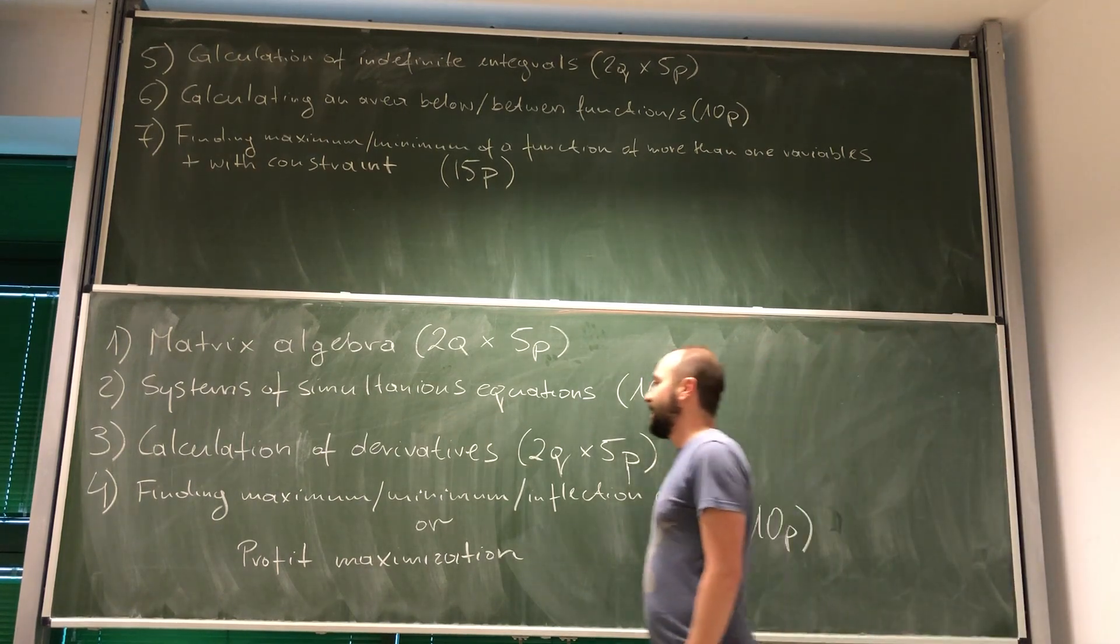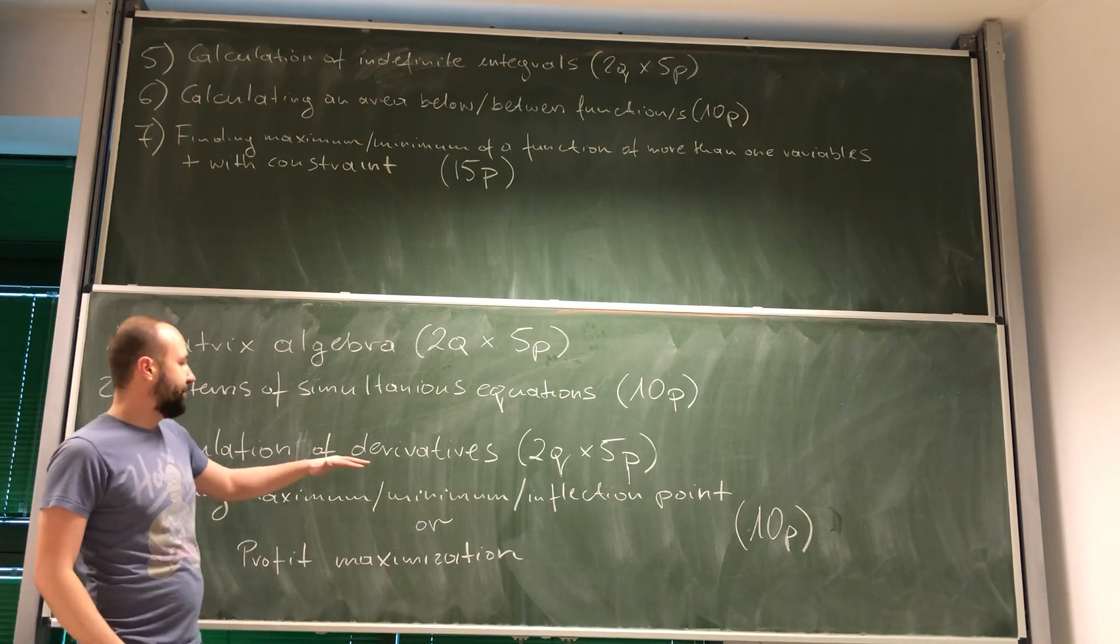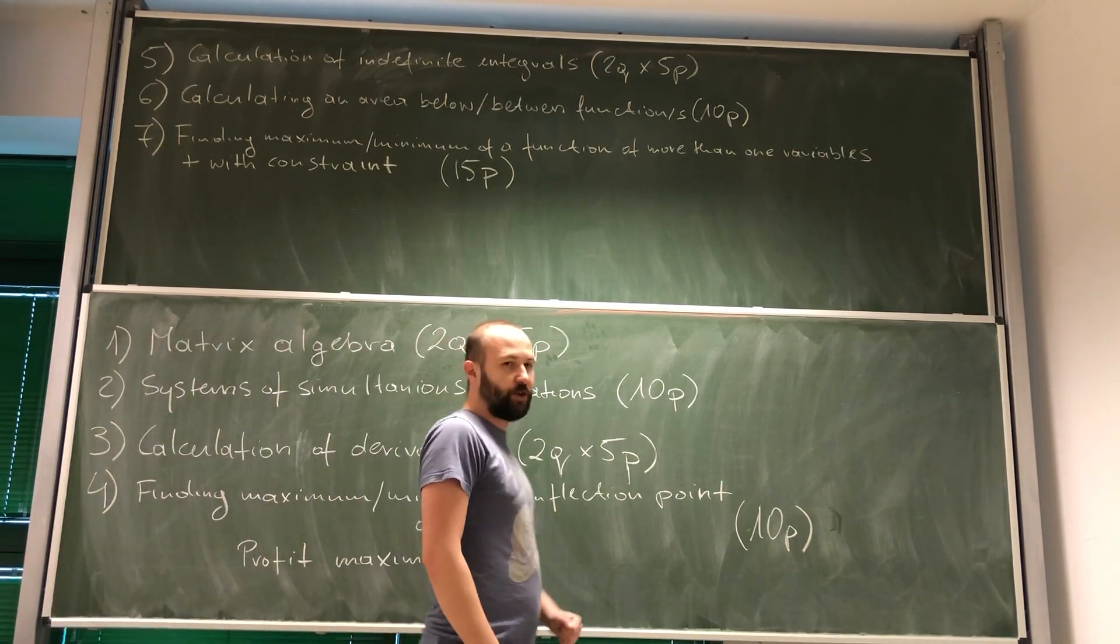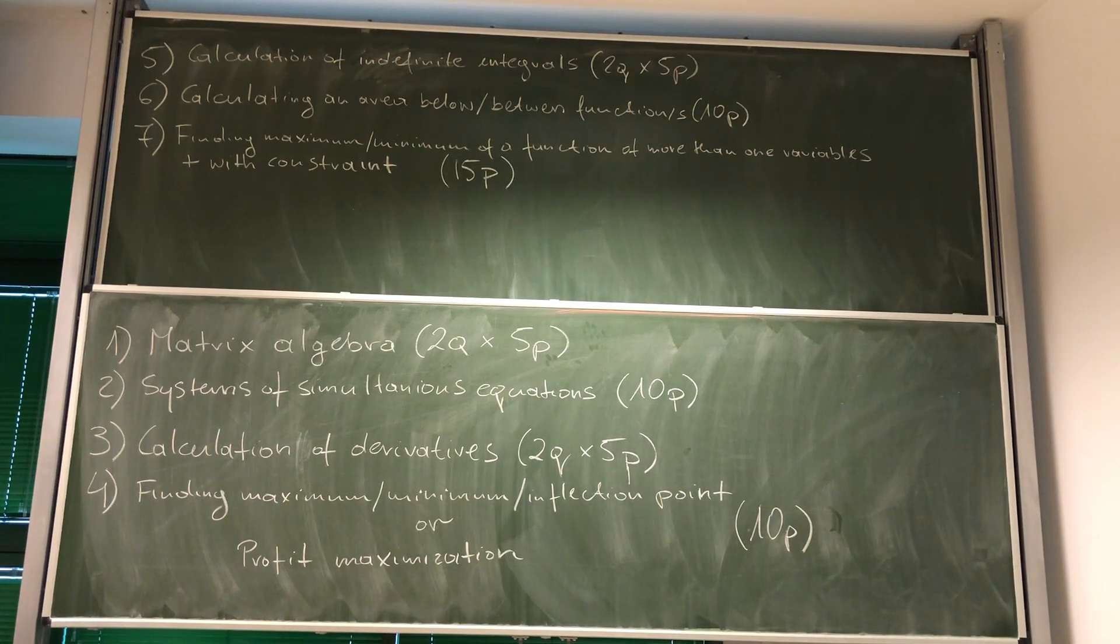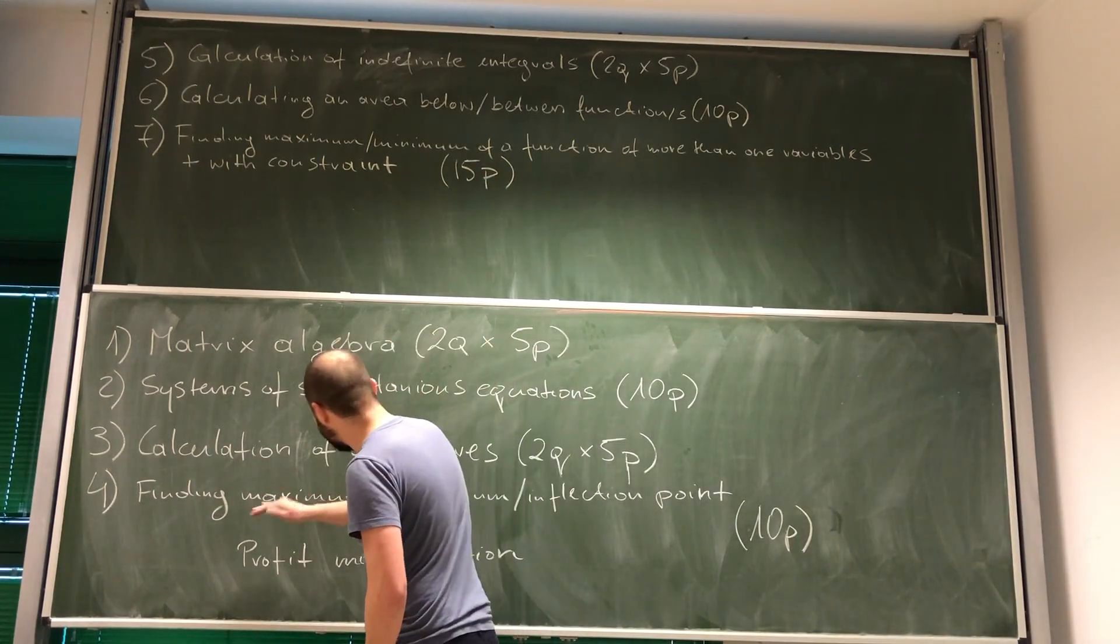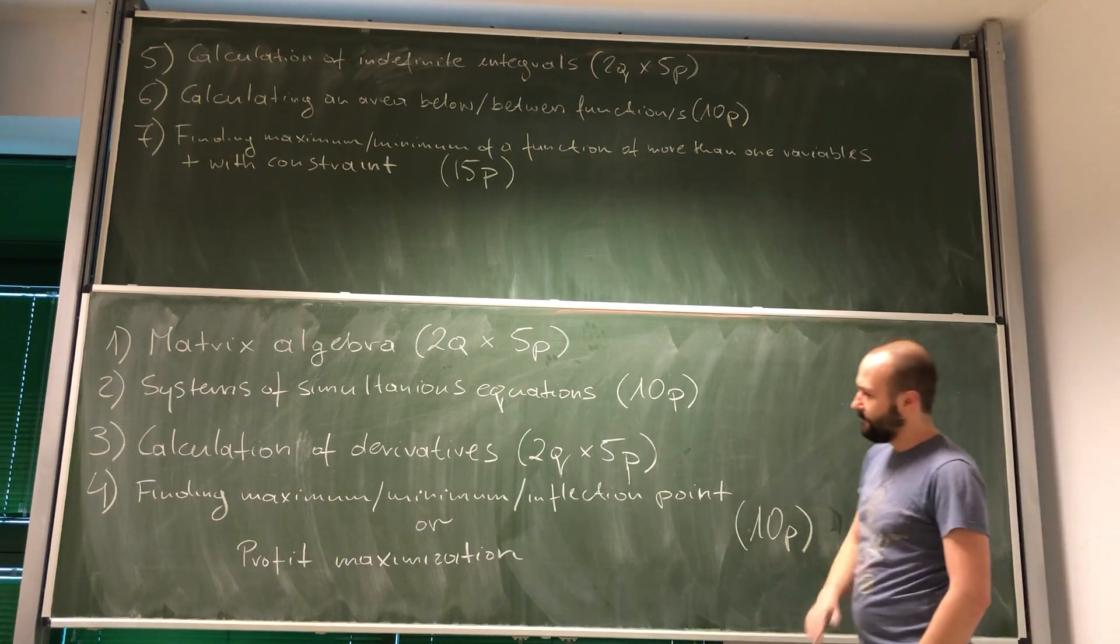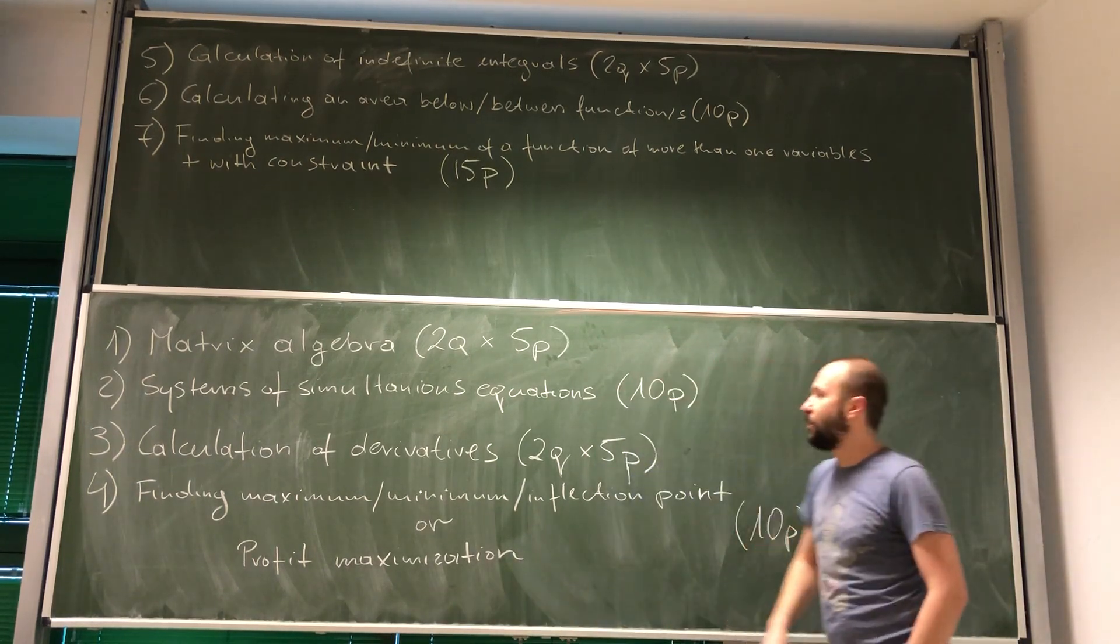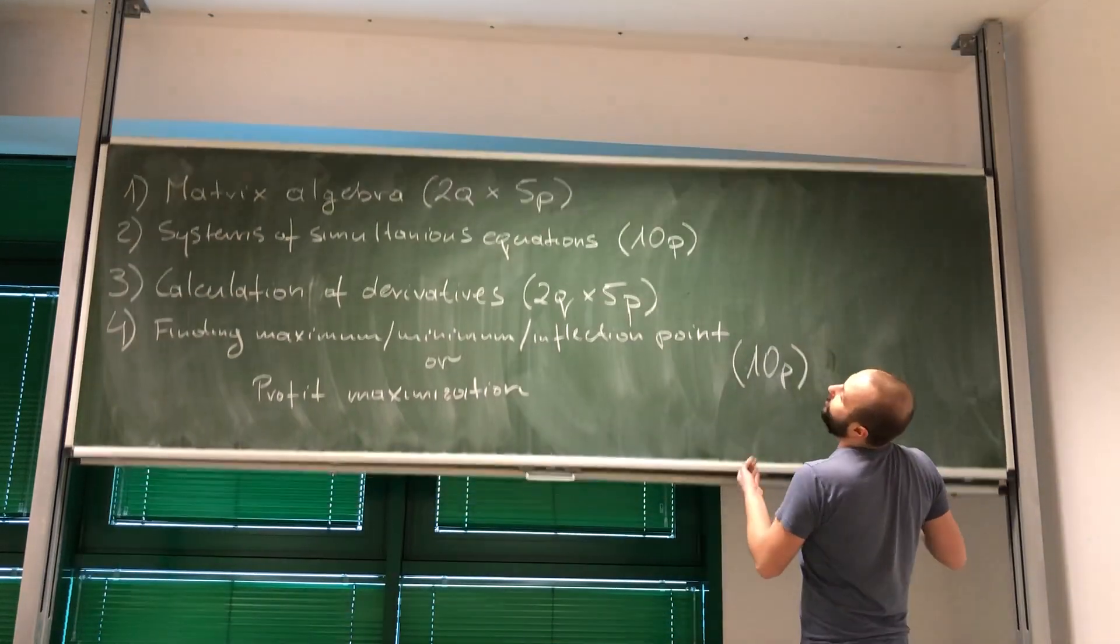Now, question number three is on calculation of derivatives. You will have to calculate two derivatives. Each is worth five points. In question number four, you will have to either draw a function, find its maximum, minimum, inflection point, or this question will be on profit maximization. It is going to be worth ten points.